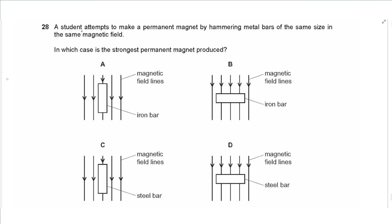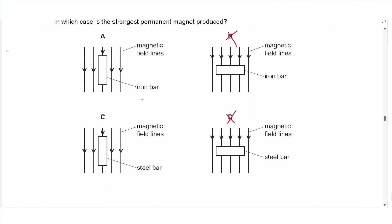Question 28: A student makes a permanent magnet by hammering metal bars in a magnetic field. The bar should be parallel to the field, not perpendicular, and the material should be steel — a hard magnetic material — not iron. The answer is C.